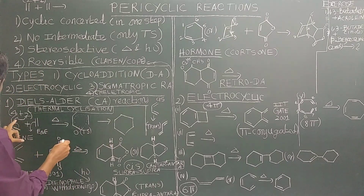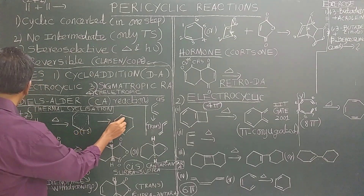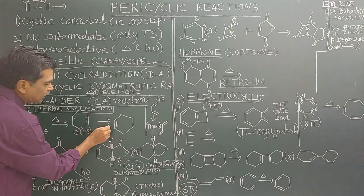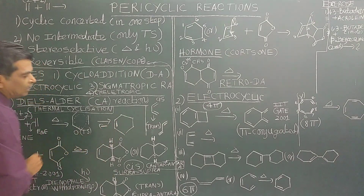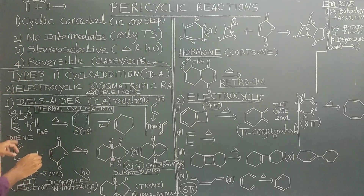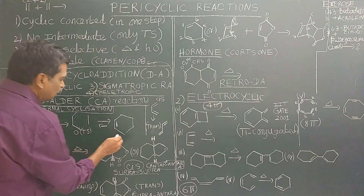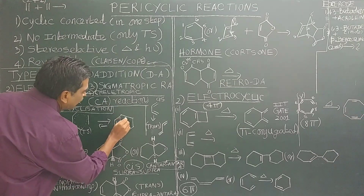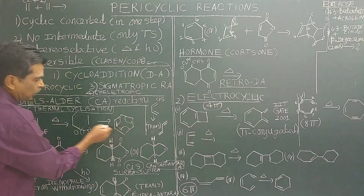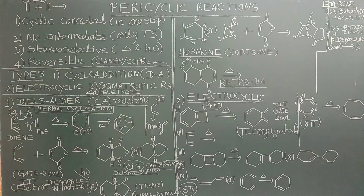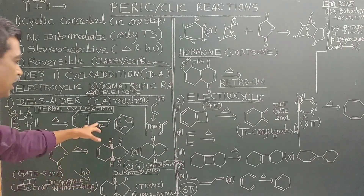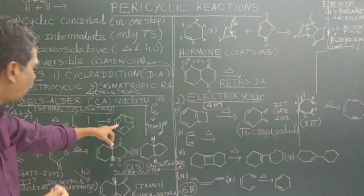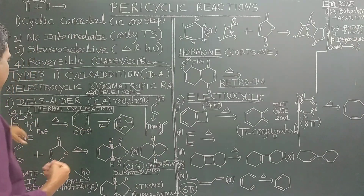Now, as you see, this is the product formed. This reaction is reversible — especially this reaction is reversible. If you run it in reverse, you will get back the starting materials. The reverse reaction is called the retro-Diels-Alder reaction.